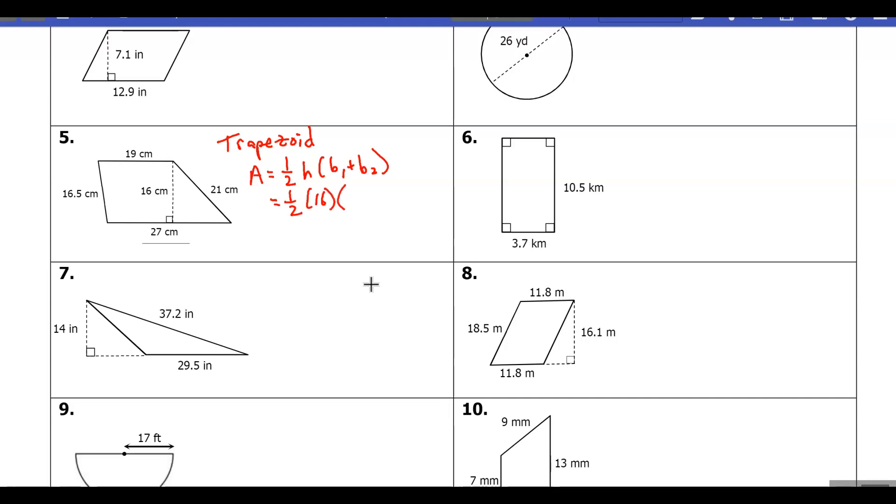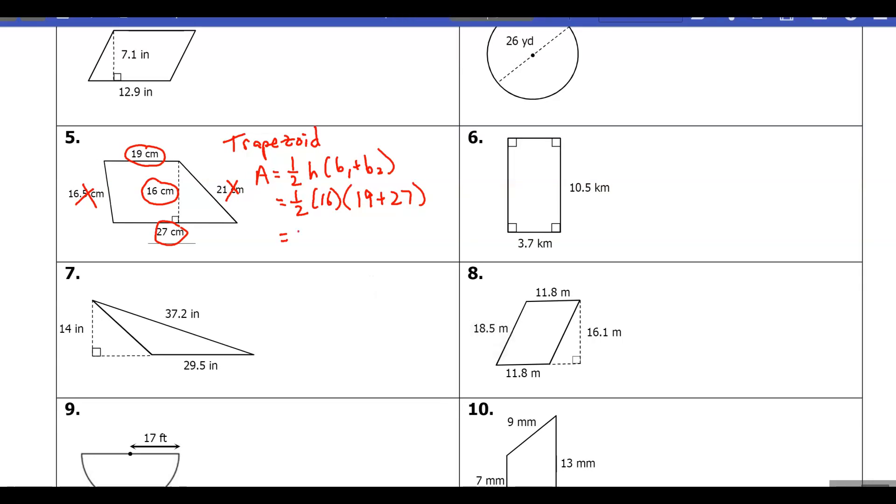Now either of these could be b1 and the other could be b2, it doesn't really matter. We'll start on the top with 19 plus the other base which is 27. I used the height, I used this base, I used this base - I didn't really need to use the other measurements, that's extra information. Sometimes they're going to give you some extraneous measurements and you need to make sure you pick out the ones you need. Let's plug this into our calculator and we should get 368 centimeters squared.